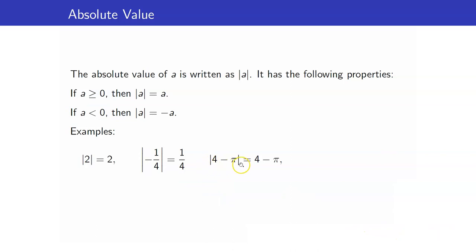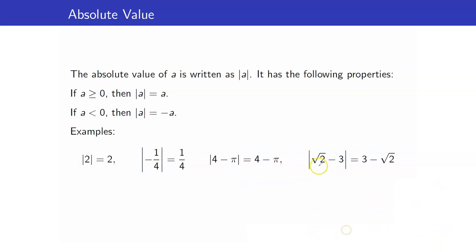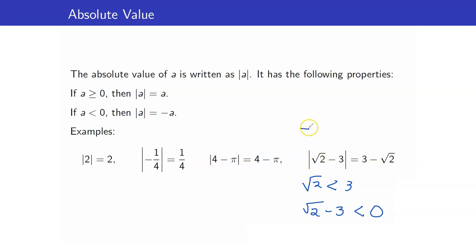The absolute value of 4 minus pi is equal to itself because 4 minus pi is positive — 4 is bigger than pi, and pi is approximately equal to 3.14. The absolute value of square root of 2 minus 3 is equal to its negative, because square root of 2 is smaller than 3. So square root of 2 minus 3 is negative, and the negative of that is 3 minus square root of 2.